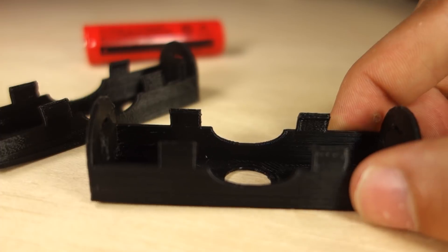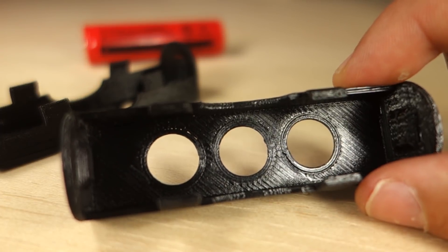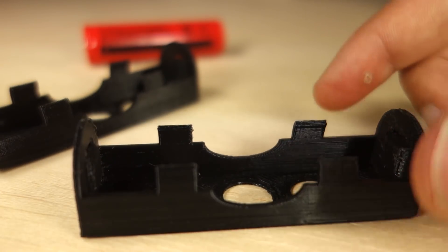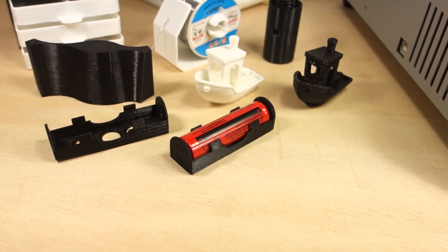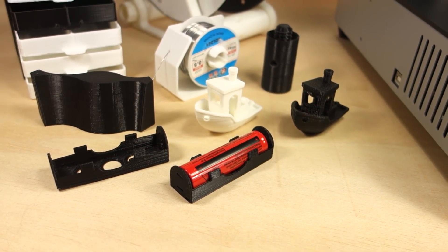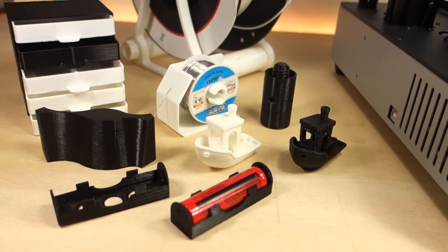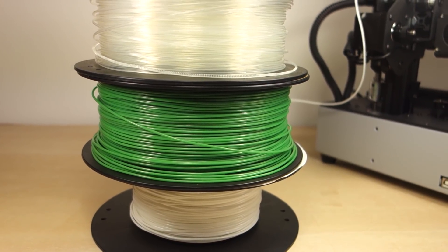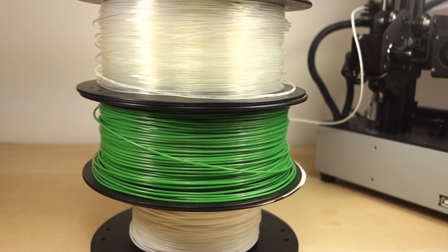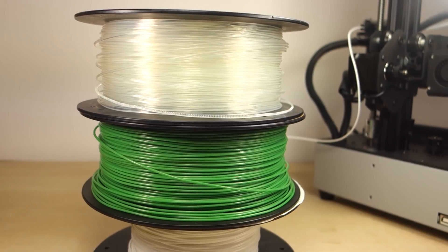Note that I'm using the Slicer Simple Mode print settings for PLA. Changing some of those settings might improve your printings. Additionally, I could have gotten better prints if my filaments were properly stored. Moisture in your filaments can ruin your prints and you'll end up getting bad results.